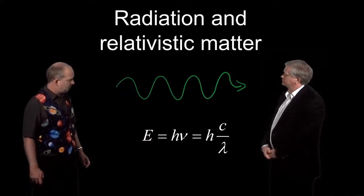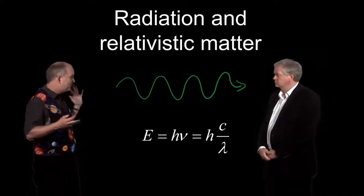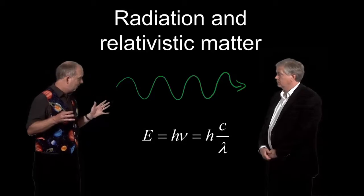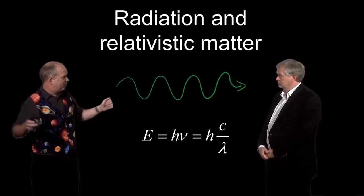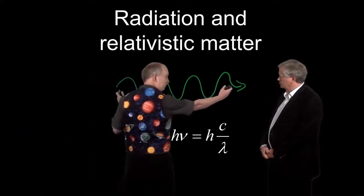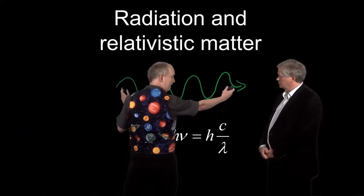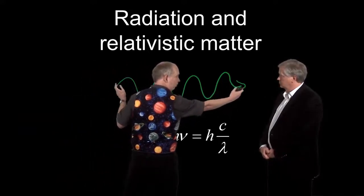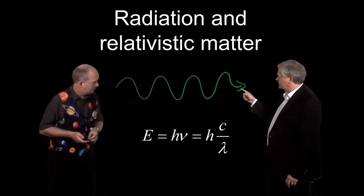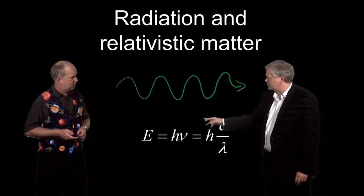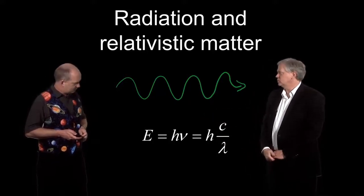In this case, as a photon or anything relativistic is flying through space, it's going to stretch. Space is going to expand. It's going to pull the front and the back further apart. The space between the front and the back, the A(t), is going to get larger and larger if space is expanding. So if the wavelength gets longer, that means the energy is going to drop.